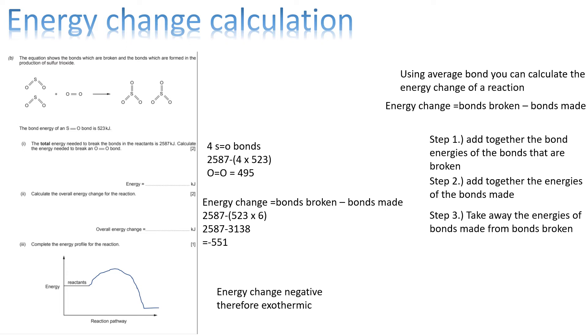Let's break this down. We know the value of a sulphur-to-oxygen bond, and we know the total value of how much energy it takes to break all the bonds. That's 2,587 kilojoules.